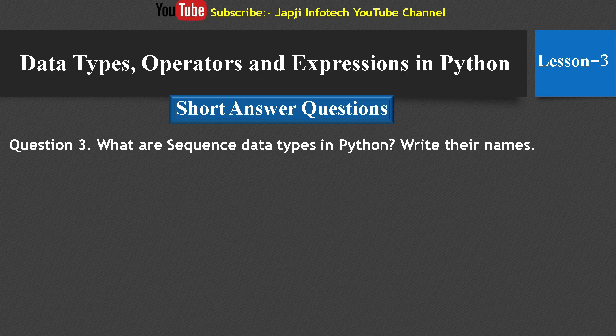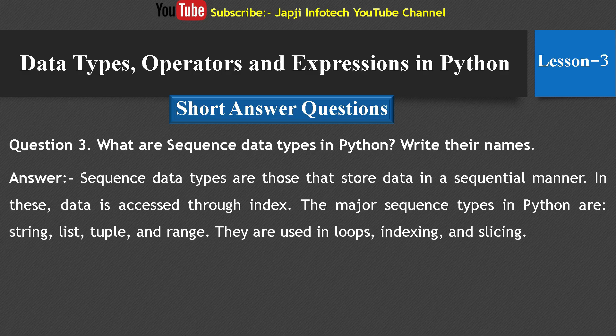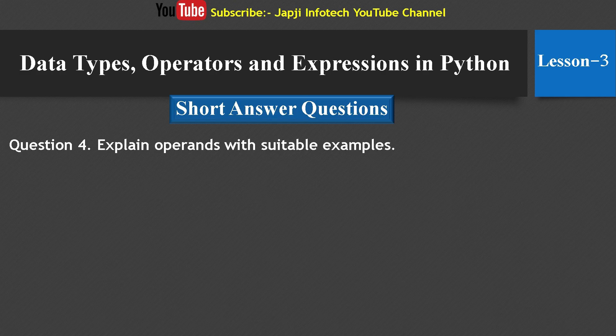Third question: What are sequence data types in Python? Answer: Sequence data types are those that store data in a sequential manner. In these types, data is accessed through an index. The major sequence types in Python are string, list, tuple, and range. These are used in loops, indexing, and slicing.